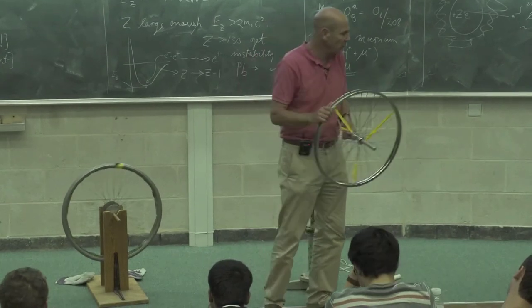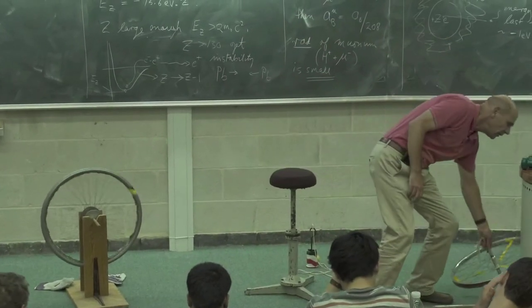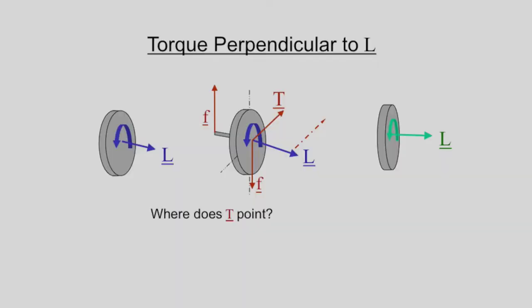So I hope you agree we've managed to explain using simple mathematics, that is the vector cross product and the ideas of angular momentum, well, we've explained how this thing manages miraculously to float through space and in particular, which direction it will precess in.